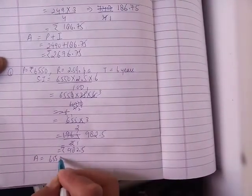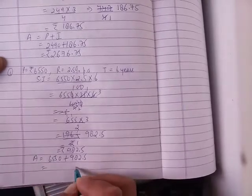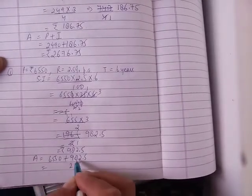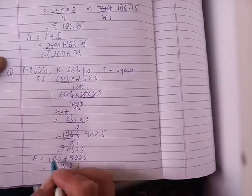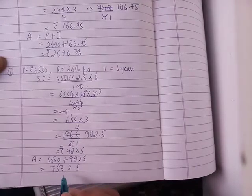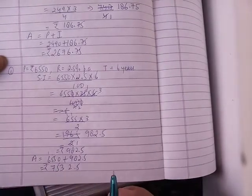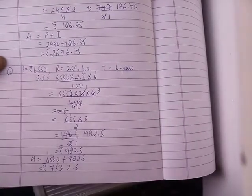Amount is principal plus interest. 6550 plus 982.5 equals 7532.5, the amount.